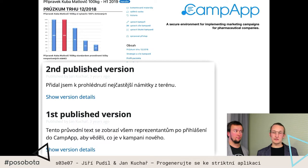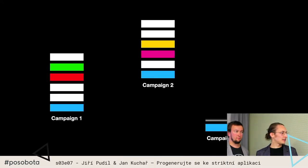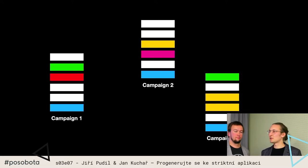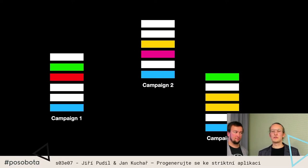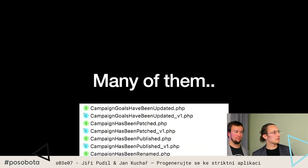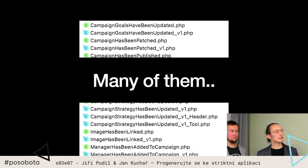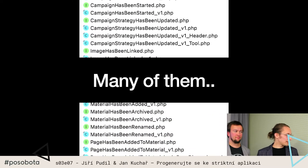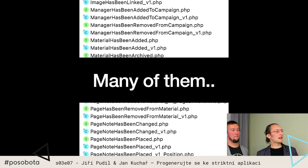V event sourcingu máme streamy a ty streamy mají různé eventy, což jsou ty kostičky, a je jich fakt hodně. Protože každá akce v tom systému má separátně jednu třídu na každý event. A to znamená, že to potom vypadá nějak takhle - je jich tam prostě strašně moc. A tohle psát ručně je jako peklo.